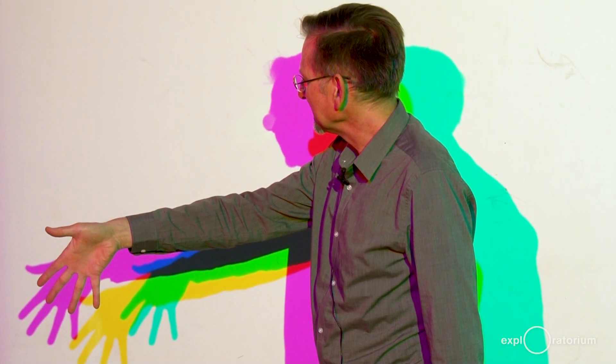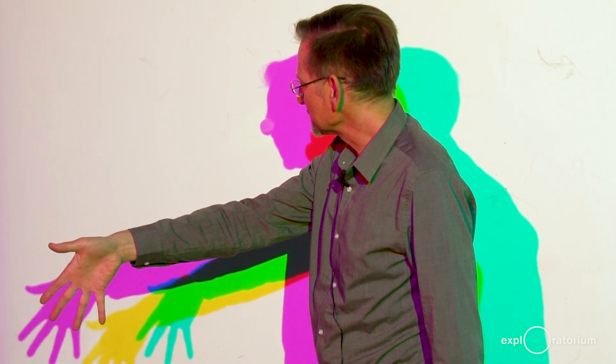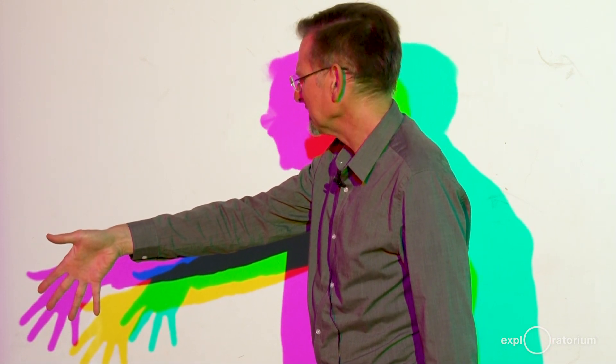We're shining a red light, a green light, and a blue light onto this wall, and together they look white to our eye.